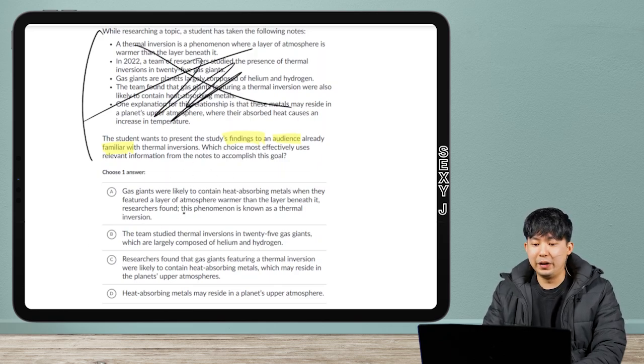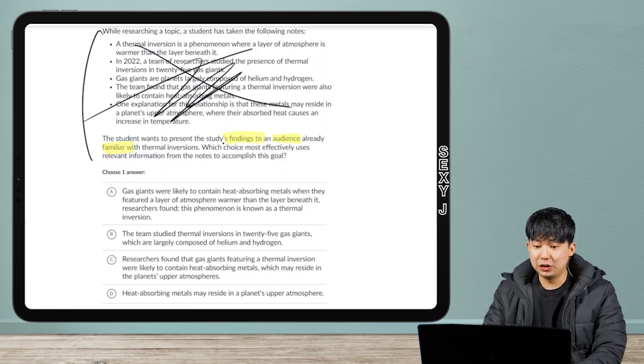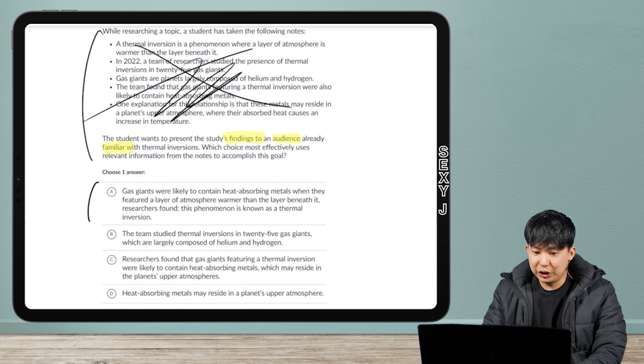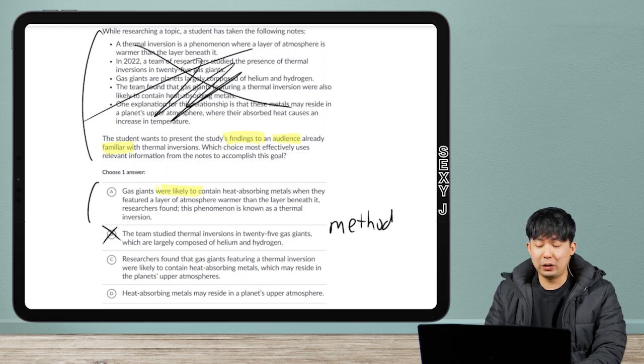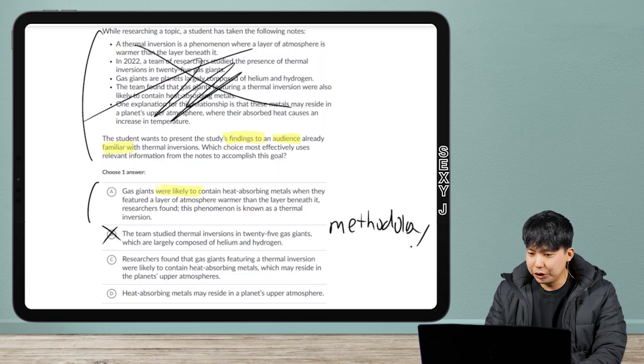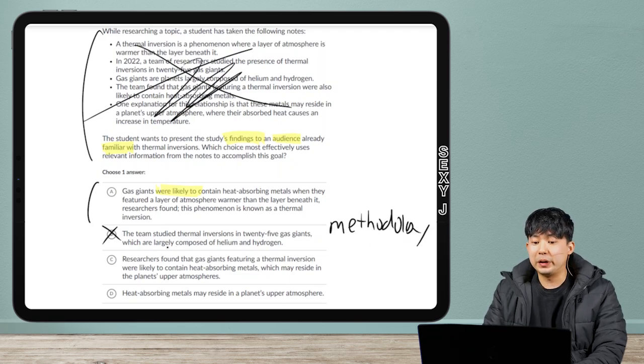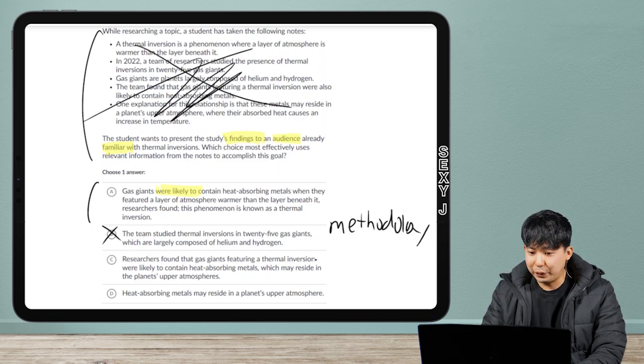I really don't want to read those. Look at answer choices. Which one of these, then, has the findings? Let's see. This has the findings, right? They were likely. That seems like a result. This one does not. This, again, would go into the methodology question. Can I spell methodology? Yes, I can. Good job. So, that is what happens during the experiment, not in the scope of this question. So, then, here, researchers found that, oh, that also works. And then, D,